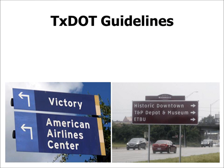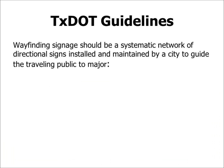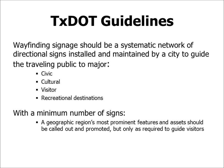Next, we'll examine some guidelines from the Texas Department of Transportation for the placement of wayfinding markers in the state right-of-way. TxDOT prescribes that wayfinding signage should be a systematic network of directional signs installed and maintained by a city to guide the traveling public to major civic, cultural, visitor, and recreational destinations, with a minimum number of signs. Only a region's most prominent features should be called out, as needed to guide visitors. Essentially, TxDOT wants communities to avoid cluttering the right-of-way, which can be a safety hazard.